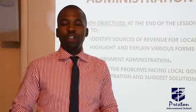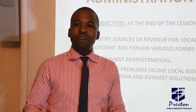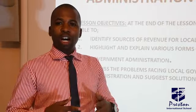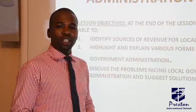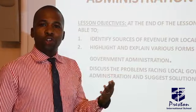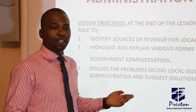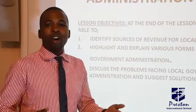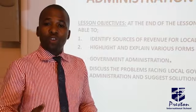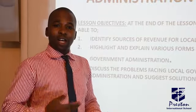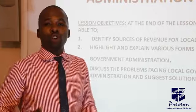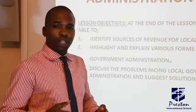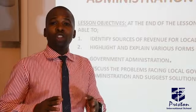Now let's go to objective number two — control over local government administration. There are different forms of control: financial control, control from the state government, and control from the central government. The central government could control local government by withdrawing the grant or money given to the local government monthly if the local government is not meeting up with its responsibilities.